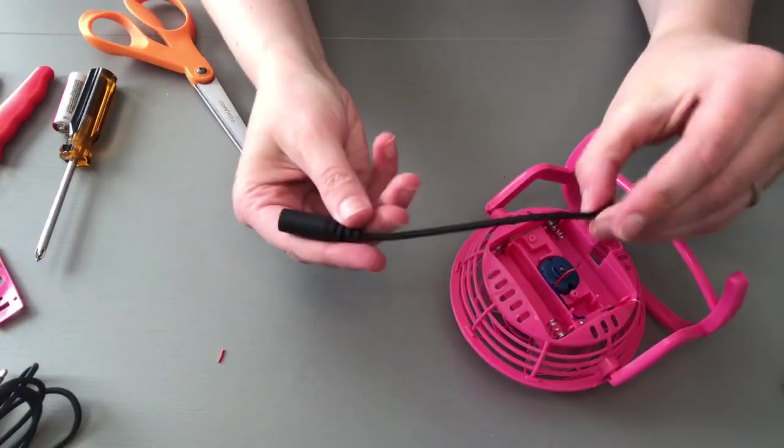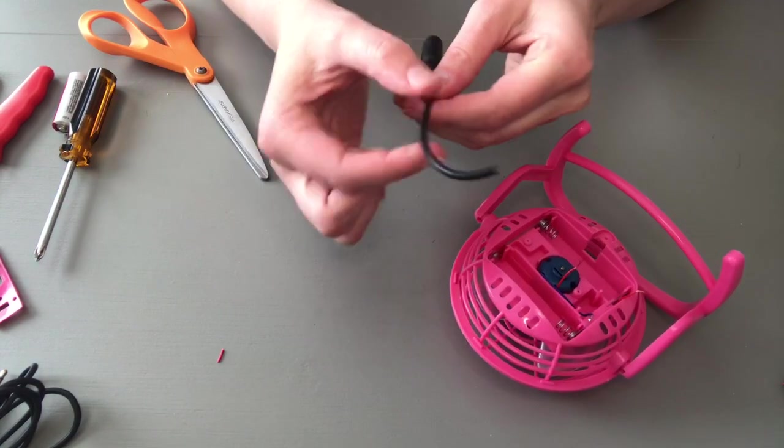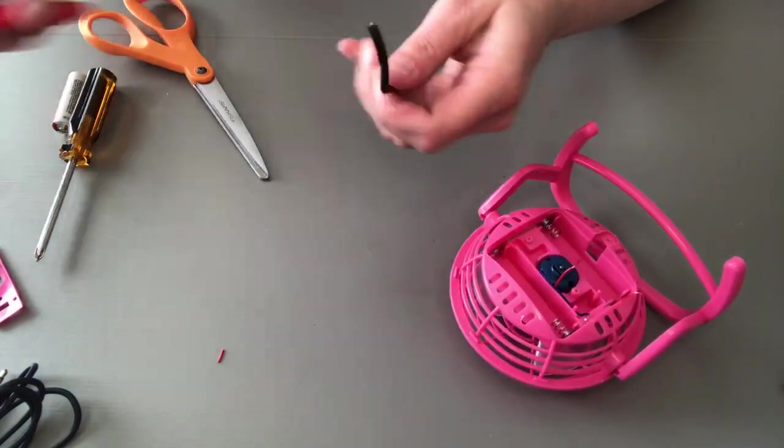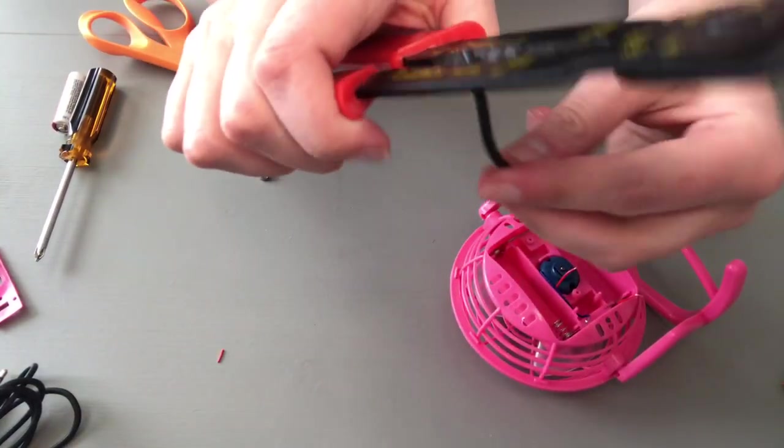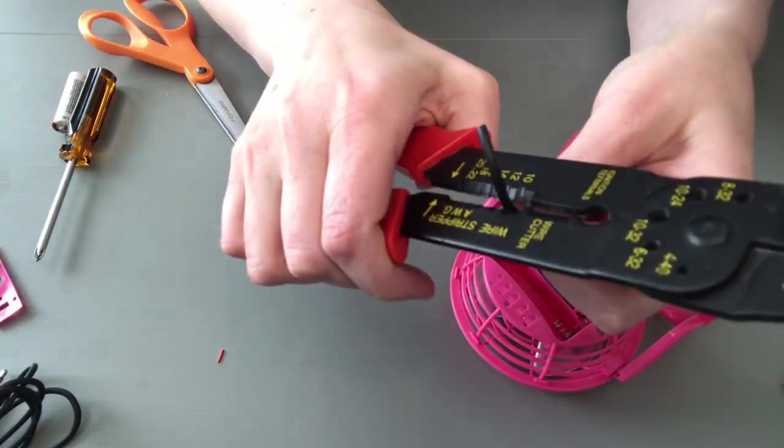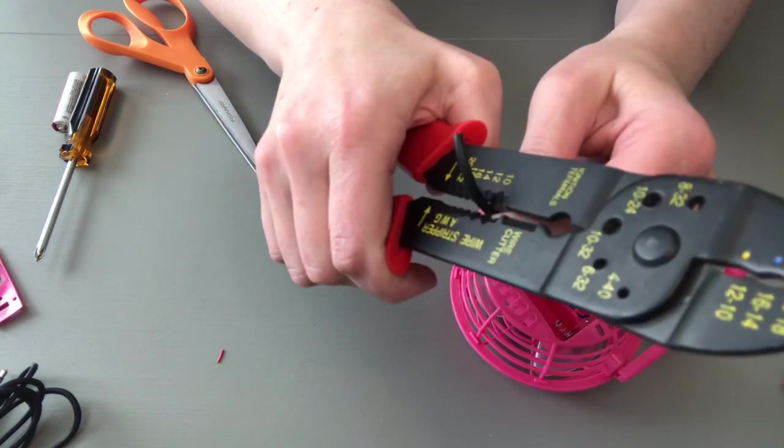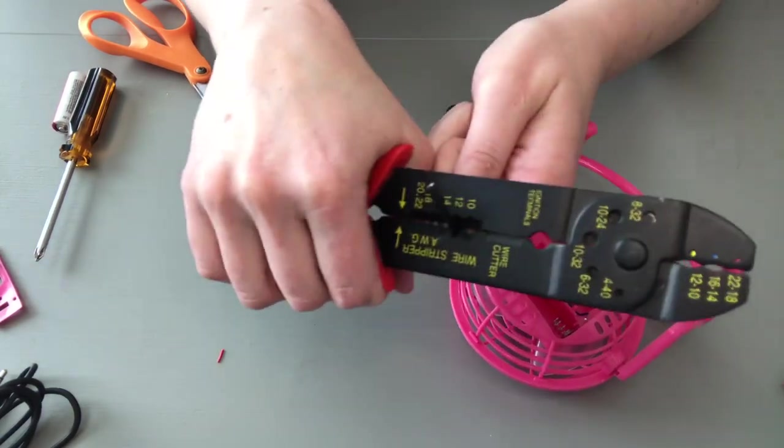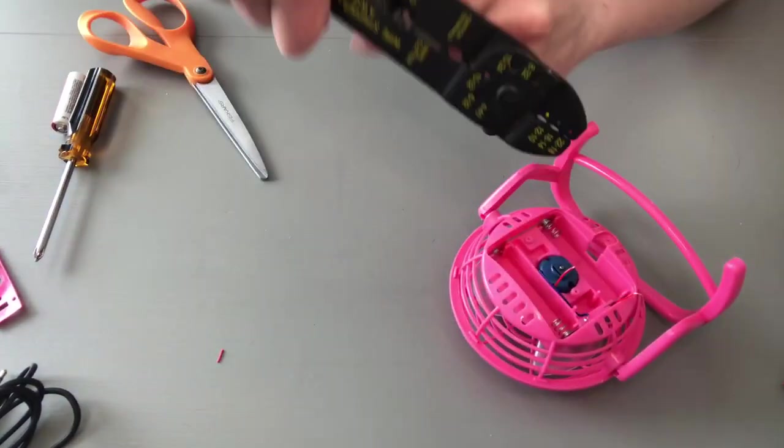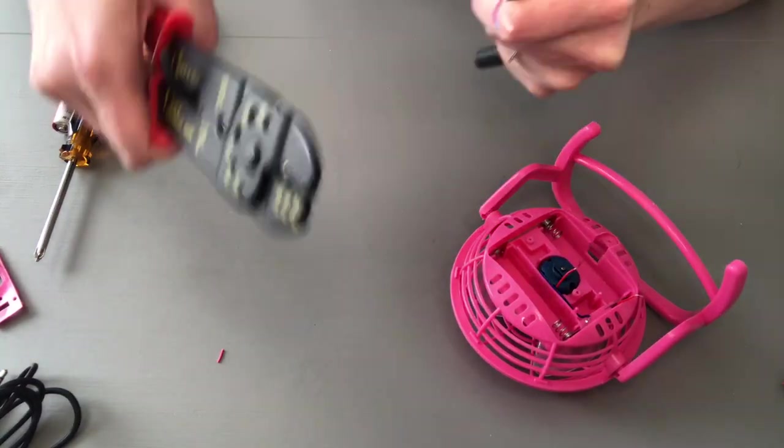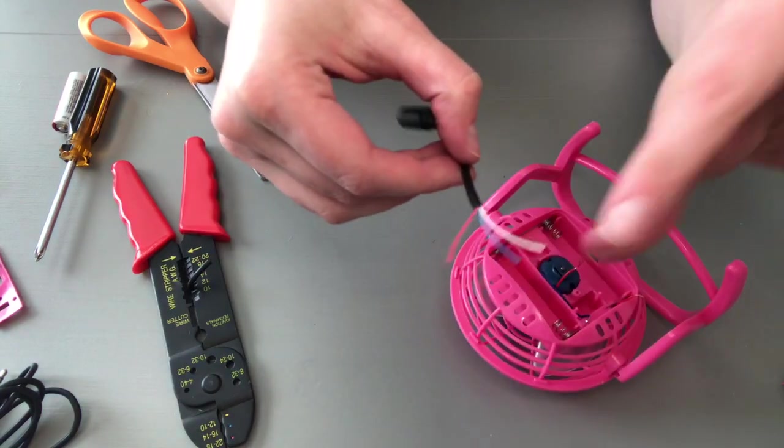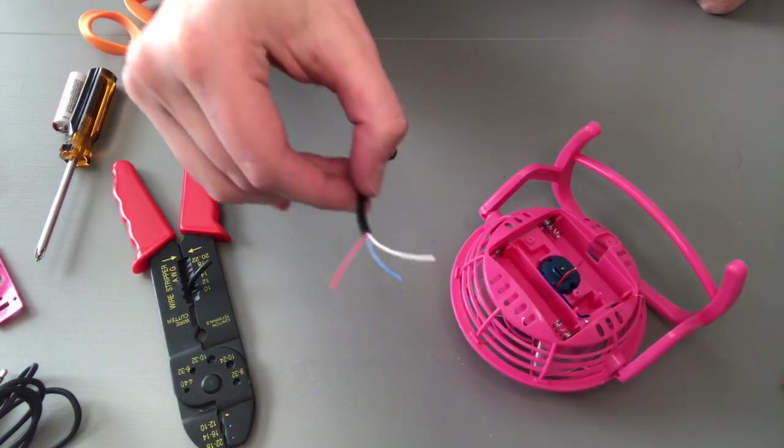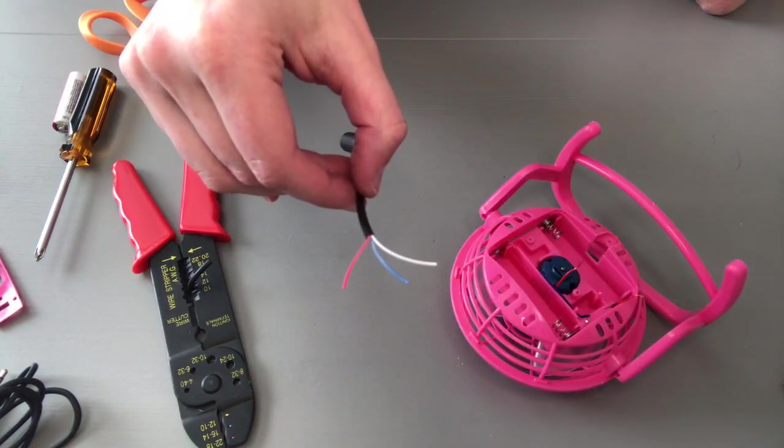Now we have this. Again, we need to strip the outer casings to get to the copper. I'm going to grab my wire stripper, it's a number 12. The best advice I was ever given is twist and pull up.